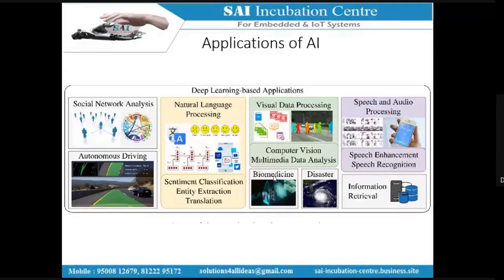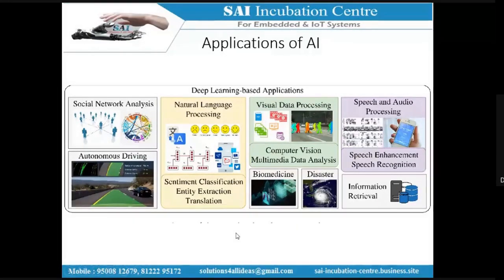In marketing, whatever you purchase online, that same advertisement appears in your social media for the next one or two weeks. This happens because Google acts as a common domain linking all your social media and online shopping accounts, collecting your browsing data across platforms like Amazon, Flipkart, Facebook, and WhatsApp.